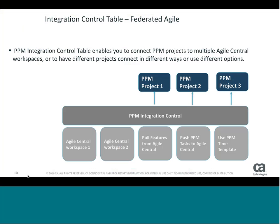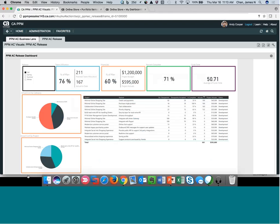The PPM and Agile Central platform integration is quite robust. In Agile Central you can have a concept of a workspace, which is really based on organization — you might have different business units that want to roll data up differently. One of the cool things about the integration is the integration control table, which allows you to set up multiple types of integrations to different workspaces within Agile Central. You have the flexibility to allow your Agile teams to organize how they want, but then have that centralized back into PPM.